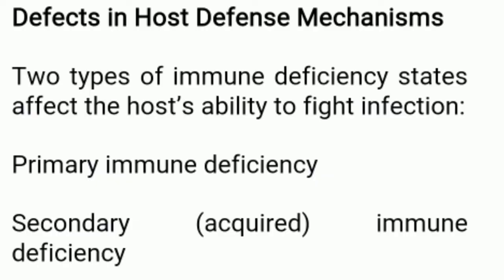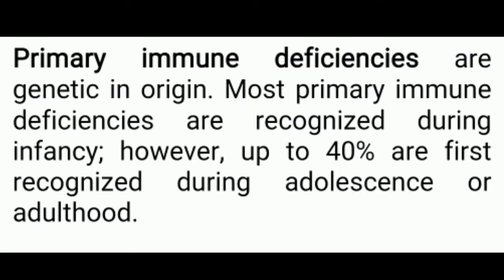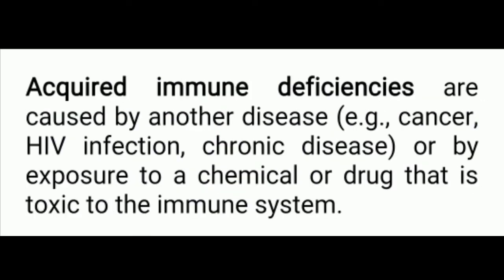Next is defect in the host defense mechanism. Two types of immune deficiency states affect the host's ability to fight infection: first is primary immune deficiency and second is secondary, that is acquired immune deficiency. Due to immune deficiency, a pathogen can easily invade the body, proliferate, and cause severe infection. Primary immune deficiencies are genetic in origin and most are recognized during infancy.